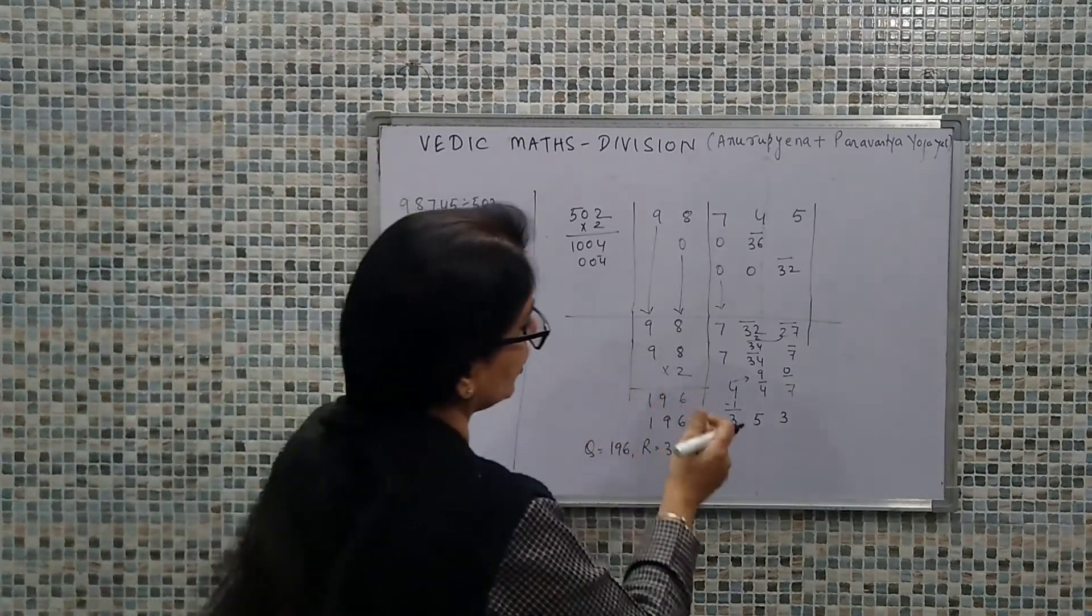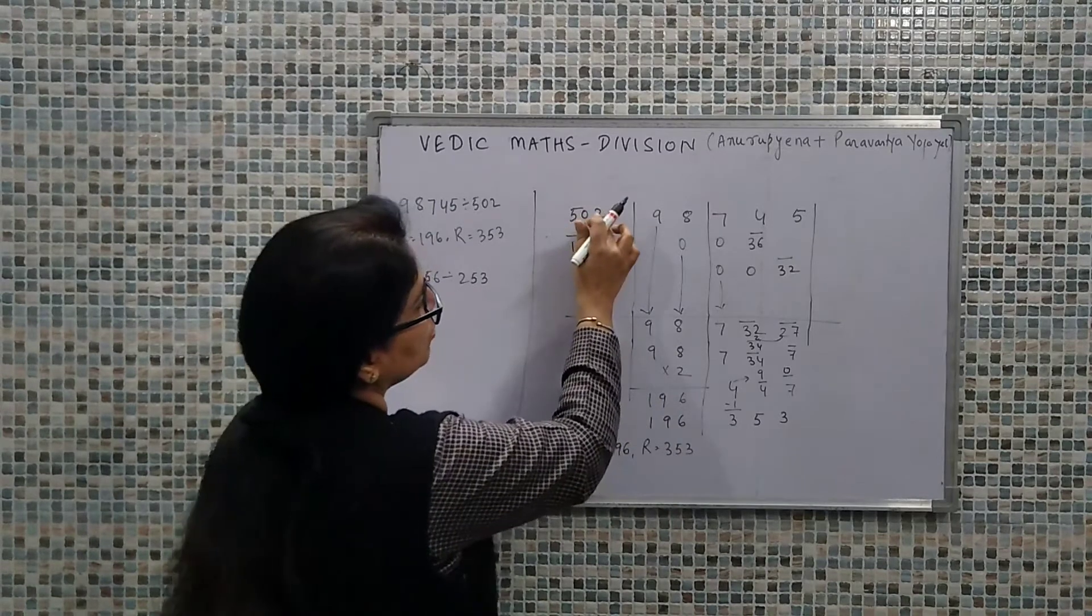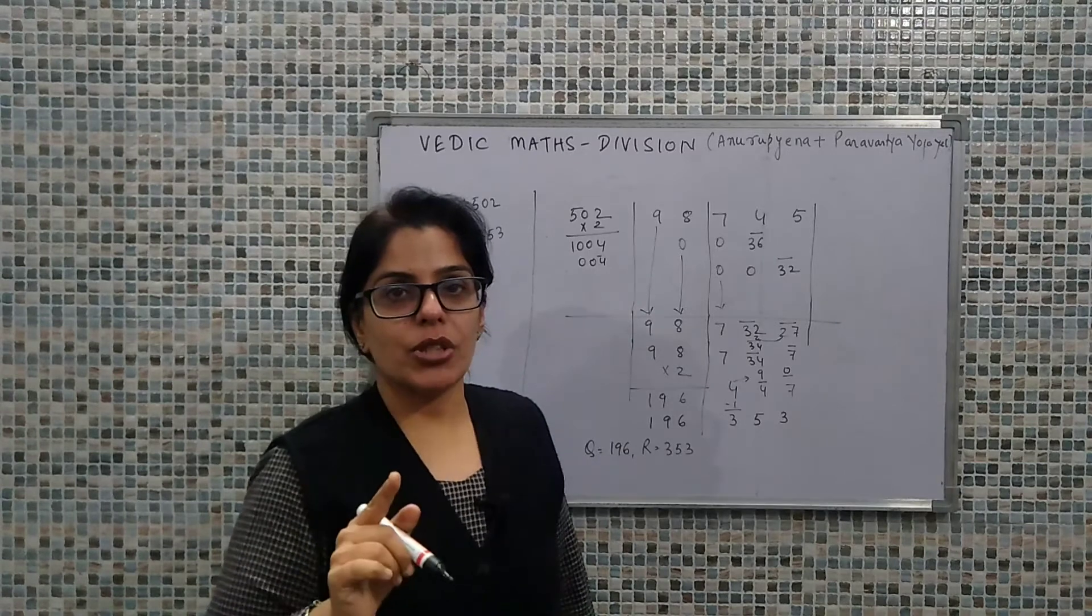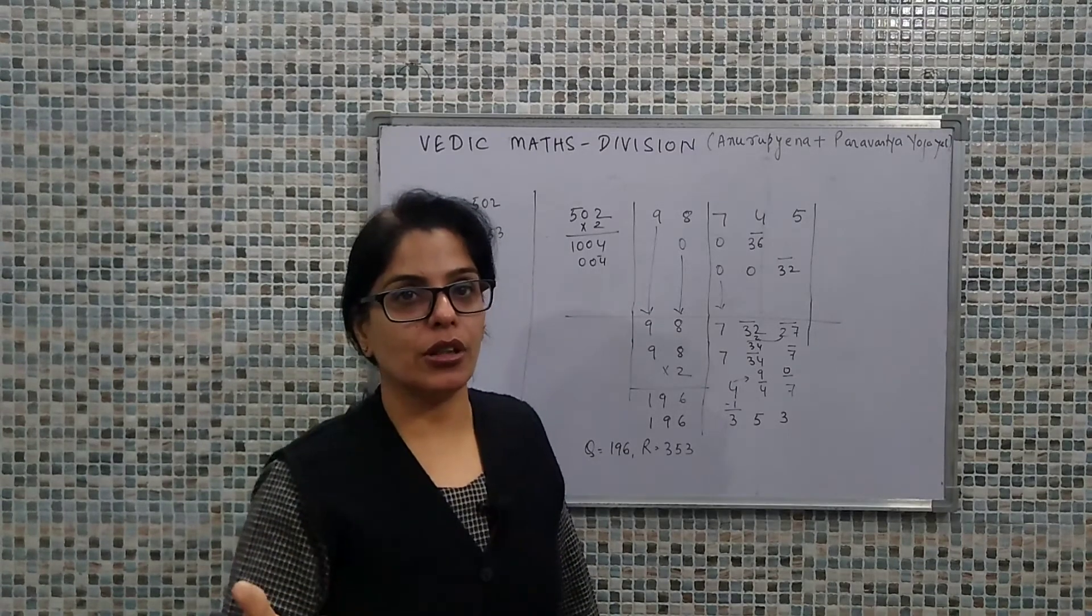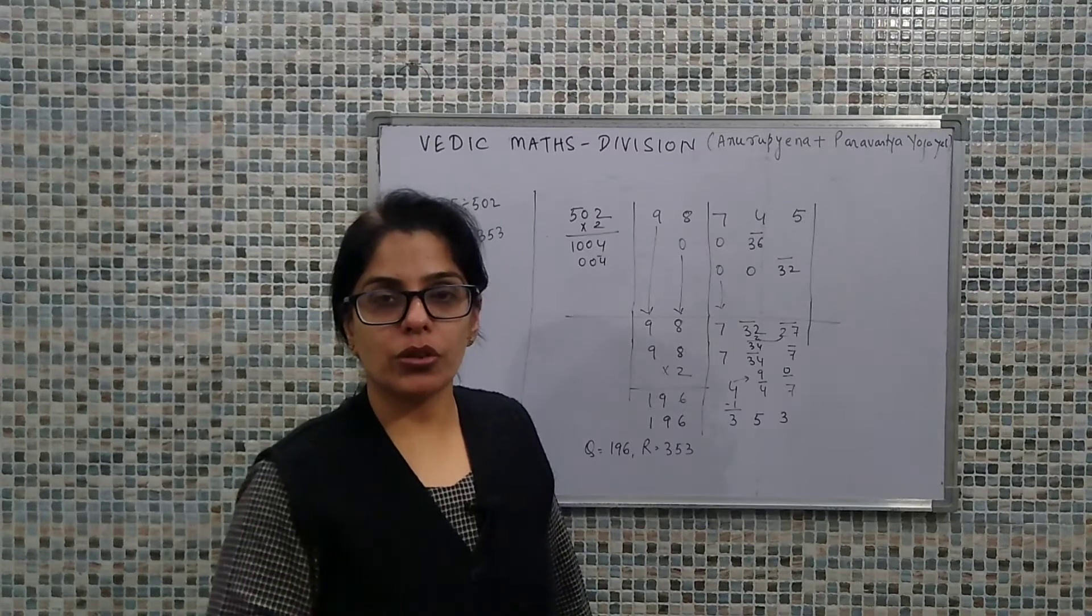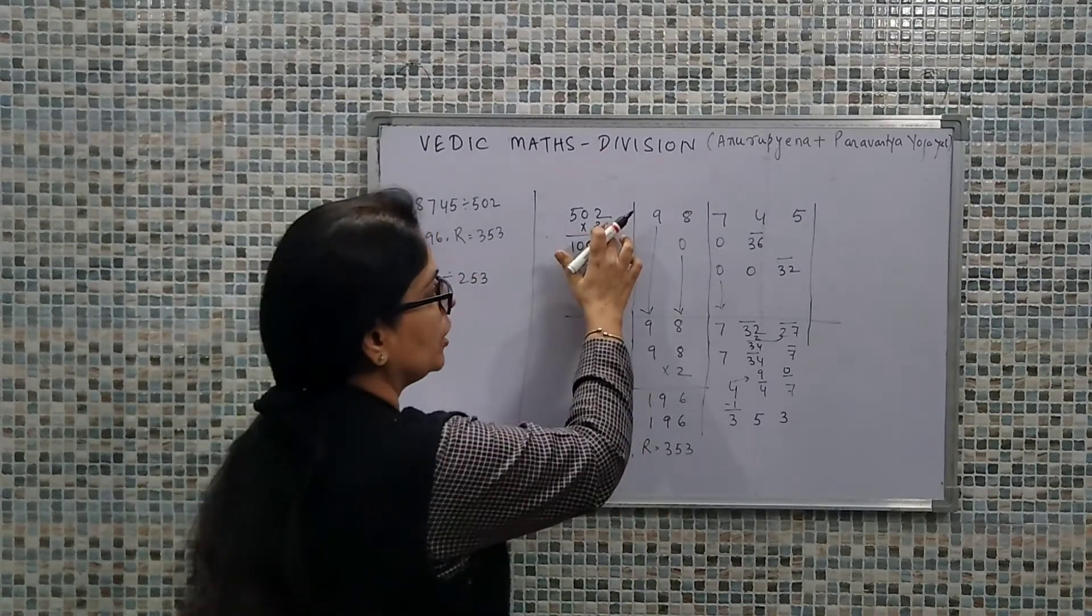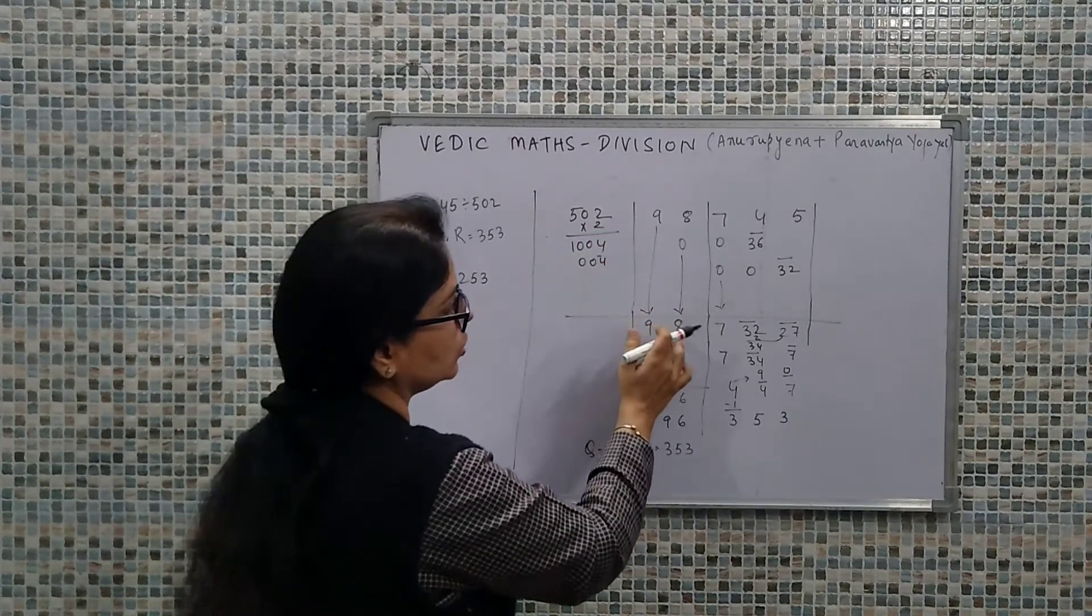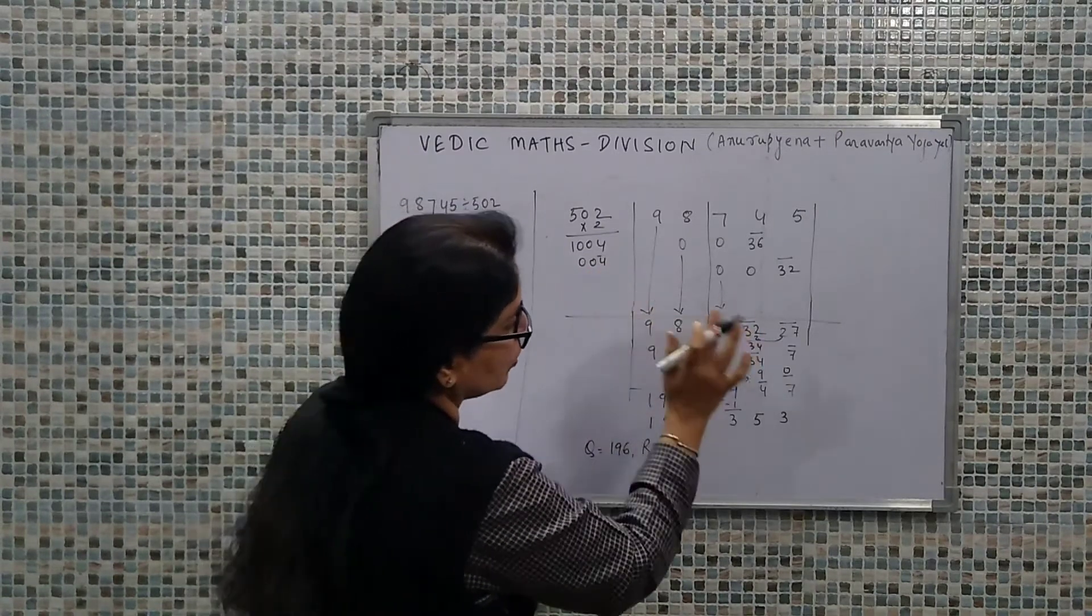So where was the complication in this calculation? First, we have 502. I'm noting one more thing: we could also use the Dhvajank method. But still when we talk about simpler and easier calculation, if we use Anurupyena, our calculation becomes relatively easier. So we converted it to 004 and simply calculated.